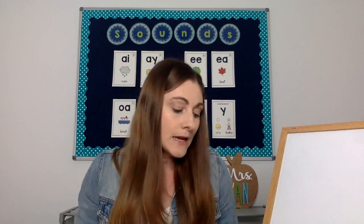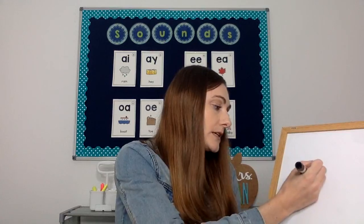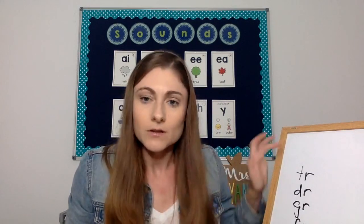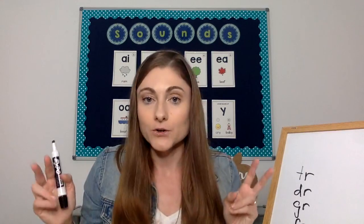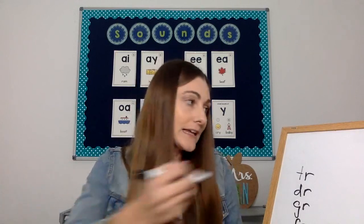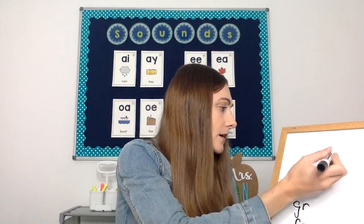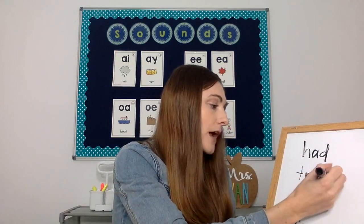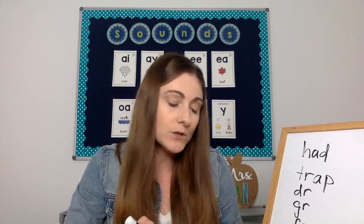This lesson is an early-to-mid first grade lesson, but you can absolutely adapt it for kindergarten or second. The skill we're focusing on is initial R blends — a consonant blend where two or three letters are blended together and each letter retains its sound. You might have TR, DR, GR, FR, and so on.